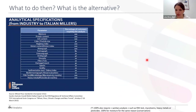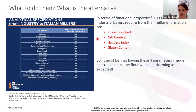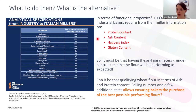This is why we need to rely on other tests as well to complement baking tests. Looking at analytical specifications from industry to Italian millers, we can see that 100% of Italian industrial bakers require from their miller specifications on protein content, ash content, the Hagberg index, and gluten content. So having these four parameters under control — does that mean the flour will perform exactly as expected? Looking at my face, you can of course suspect that the answer is no.